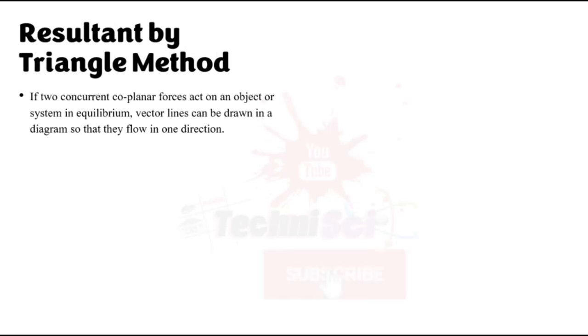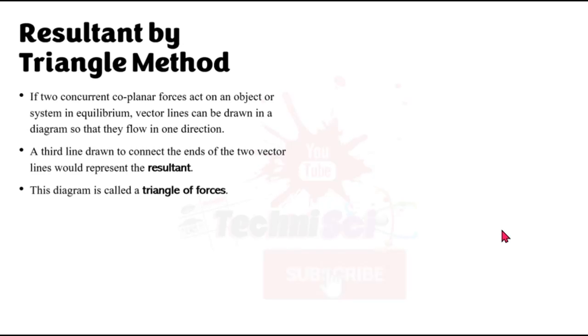If you have two concurrent coplanar forces, now let me pause if you have no idea what these are or you just need a little refresher, check my i-cards and then you can watch that video, then come back to this one. If two concurrent coplanar forces act on an object or system in equilibrium, the vectors can be drawn in a diagram so that they flow in one direction. A third line drawn to connect the ends of the two vector lines would represent the resultant. Remember, previous video we spoke about the vector lines. Yes, we also spoke of the vector drawing. So we are going to be starting that in this one. When we have those three lines, we would call this a triangle of forces. So once you have a vector diagram with three sides and it's a closed figure, then we have a triangle of forces.